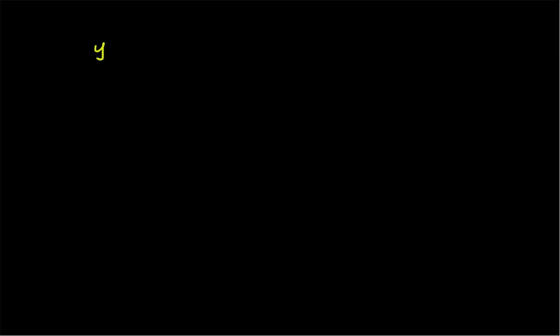Hello, welcome. In this short video, let us see how to use MATLAB to compute the energy and power of a given signal, and we will verify the results with theoretical values. The signal y(t) is equal to (1+j) — a complex valued signal — multiplied by e^(jπt/2), a complex exponential. The value of t is from zero to ten, a finite duration. We want to find both energy and power of this signal.